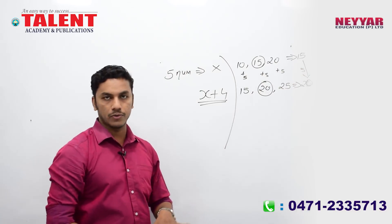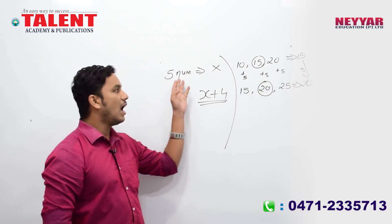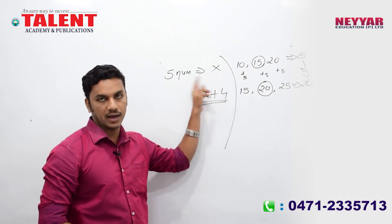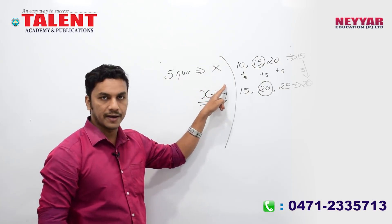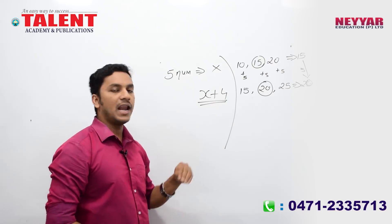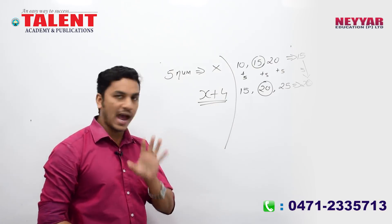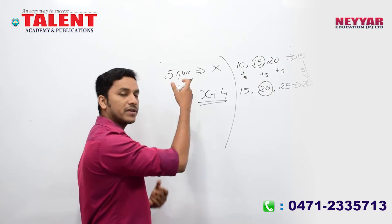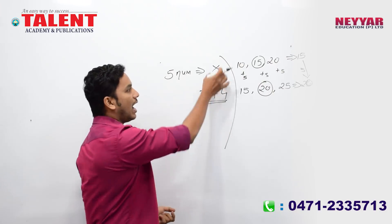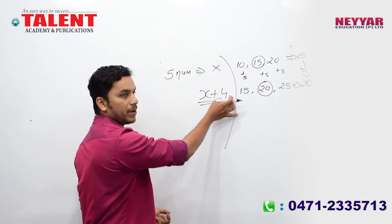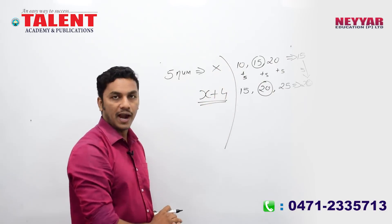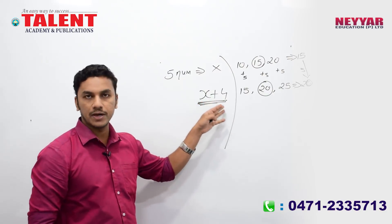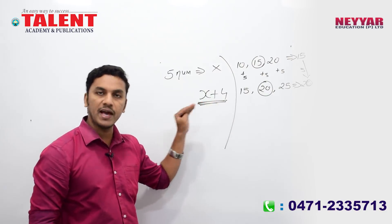Add 5 to every number. What do we do? Add 5 to each of the 5 numbers. The answer is option C: x plus 4. This is the answer.